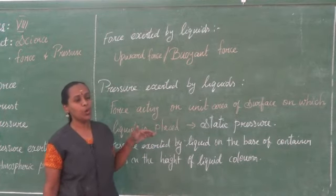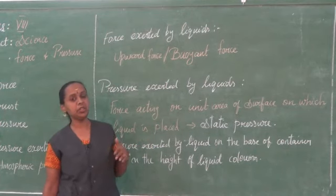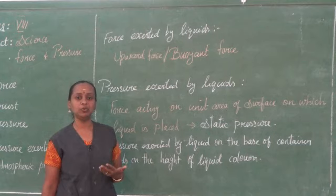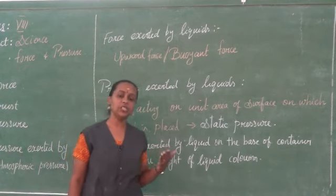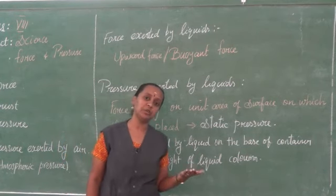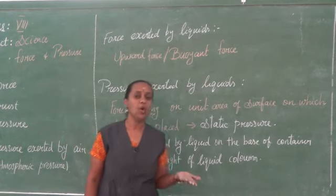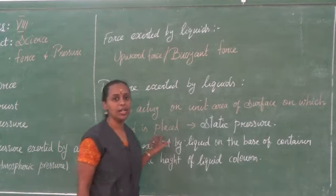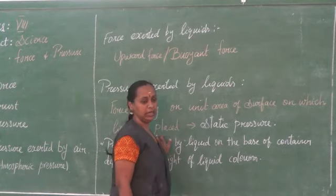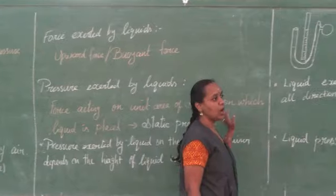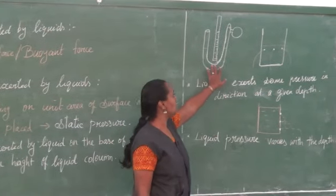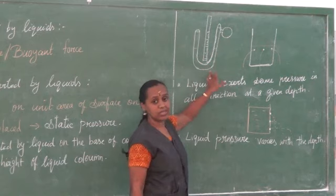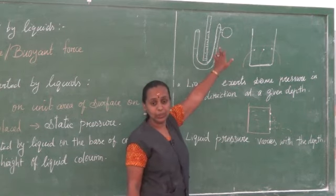How will we measure this liquid pressure? What is the instrument we use to measure? As we use a barometer to measure atmospheric pressure, for liquid pressure we use an instrument called a manometer. The manometer is a glass vessel having two limbs.